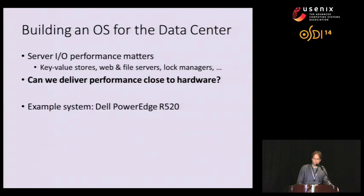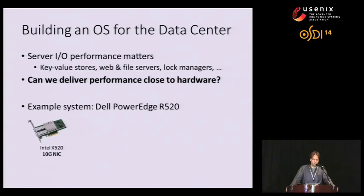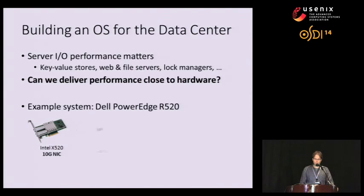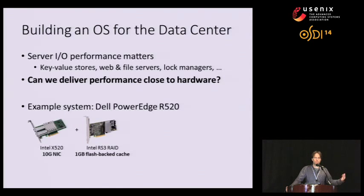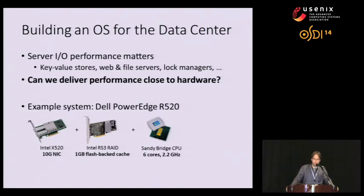Let's look inside the system, starting with I/O devices. The first is the Intel X520 dual-port 10-gigabit Ethernet controller. Then we have an Intel RS3 RAID controller containing one gigabyte of cache memory backed by flash — essentially a piece of persistent memory. And then we have a Sandy Bridge CPU with six cores at 2.2 gigahertz.